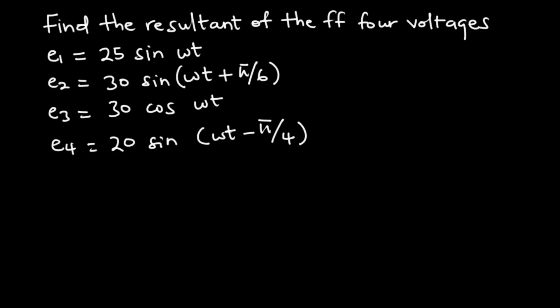So for this question, we are going to find the resultant of the following four voltages. We have E1 to be 25 sine omega t. We have E2 to be 30 sine omega t plus pi over 6. And then we have E3 to be 30 cos omega t. And then we have E4 to be 20 sine omega t minus pi over 4.